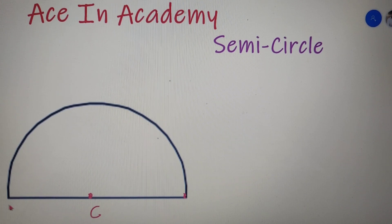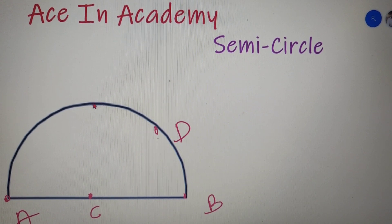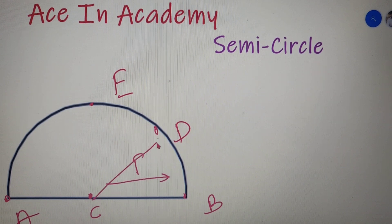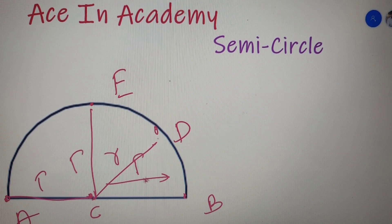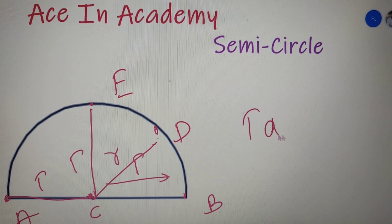If I name the center as C and the points on the boundary as A, B, D, and E respectively, then CB is the radius, CD is also the radius, CE is also the radius, and AC is also the radius. So the distance between the center and any point that lies on the boundary of the semicircle is called the radius of the semicircle.